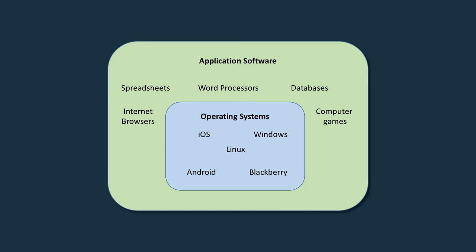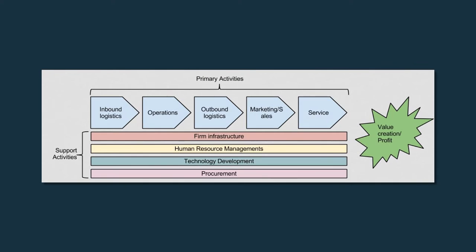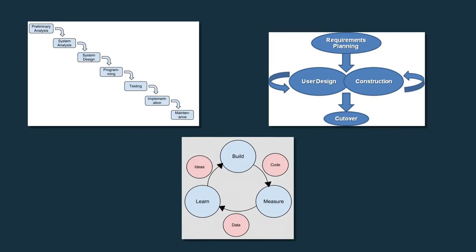In Unit 3, you learned about metadata, databases, and data management. In Unit 4, you learned about information systems and strategies, and the people in information systems. In Unit 5, you learned about multiple software development methodologies, programming languages, and tools.